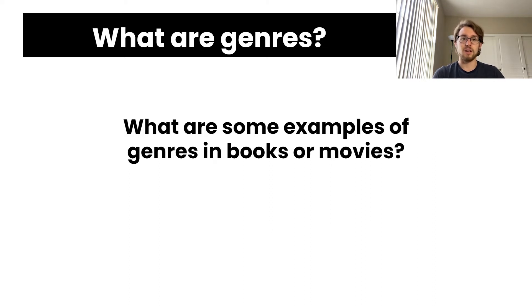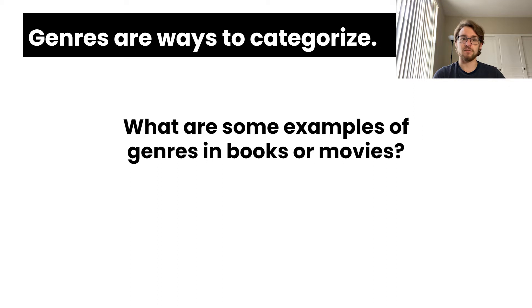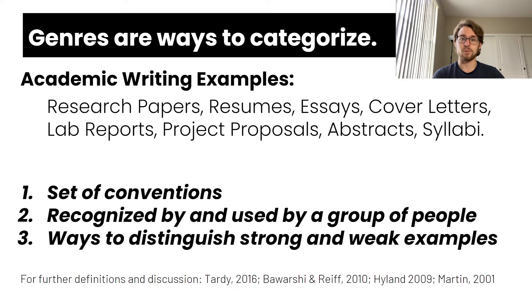The different aisles of a bookstore were the different rows in Netflix. In short, genres are ways to categorize, and they have certain conventions about them that make them identifiable. For instance, it's easy to tell the difference between a romance and a horror story, and in movies, we can easily identify a documentary from a comedy. This is because each of these genres have specific conventions or features that make them distinct. In academic writing, genres include lab reports, essays, and research papers, among others. With practice, you'll be able to identify a particular writing genre's key information, features, and conventions, and recognize what makes certain examples of this genre strong and others not quite as compelling.